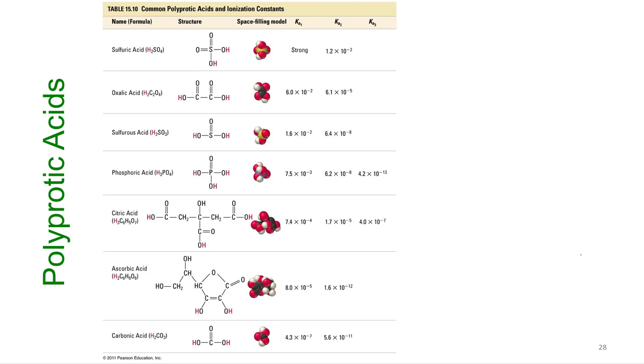Citric acid. Who doesn't like some citric acid? 7.4 times 10 to the minus 4, 10 to the minus 5, 10 to the minus 7. And it's triprotic. Ascorbic acid. That's the chemical name for vitamin C. So that's vitamin C that you need. And it's diprotic. Each time it donates, it gets weaker and weaker.